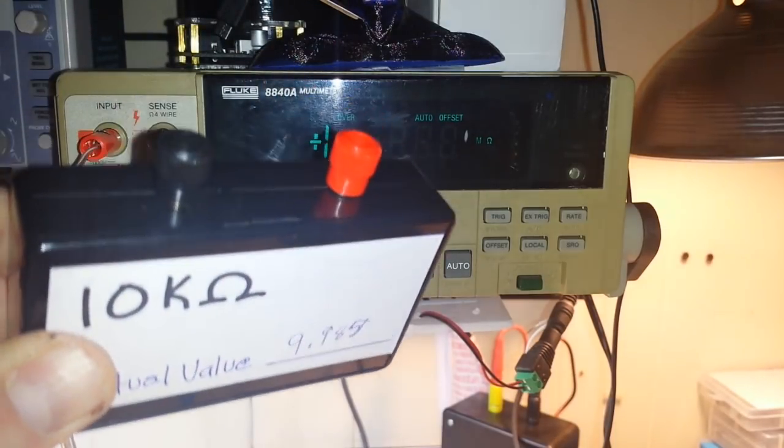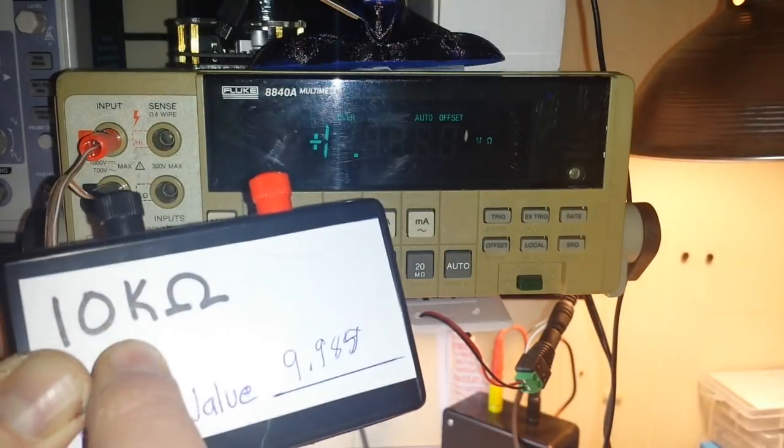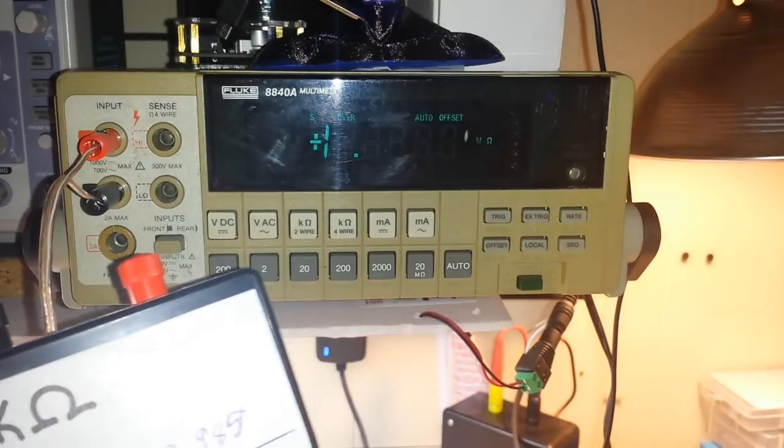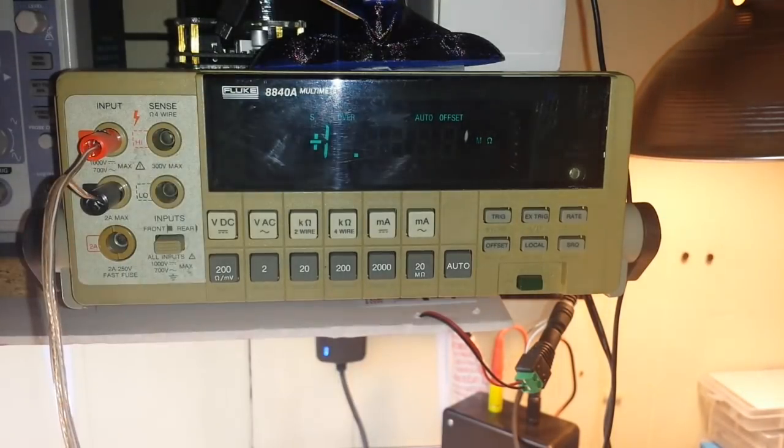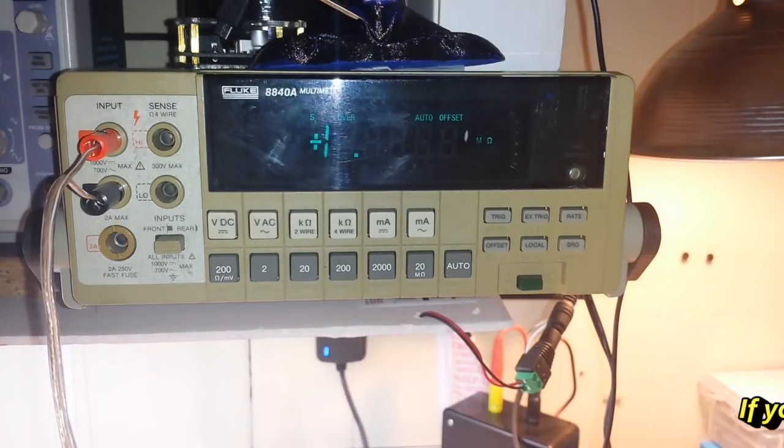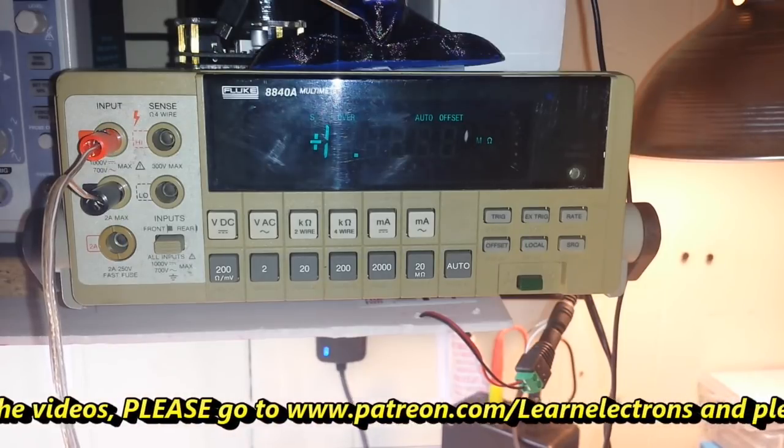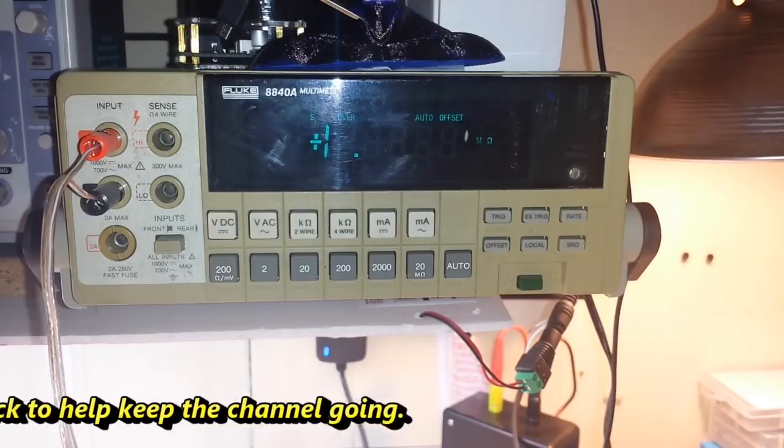Now whenever I want to check my meters, I know that I have a 10K resistor that reads 9.985, which is close enough for me. So I hope you guys enjoyed this. If you did, give me a thumbs up. Feel free to comment, share, and don't forget to subscribe. And again, Happy New Year. That's it, I'm out. Peace.